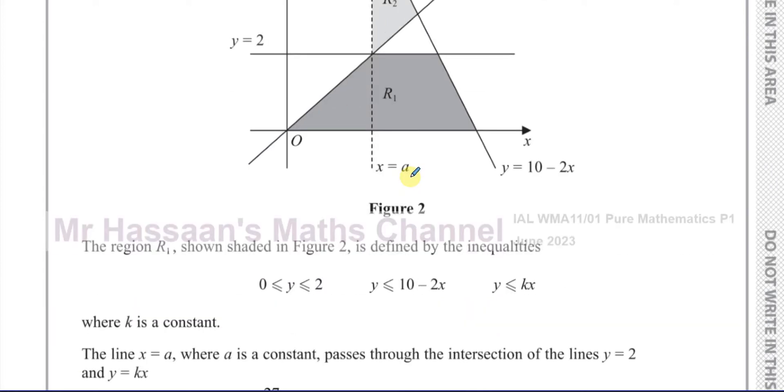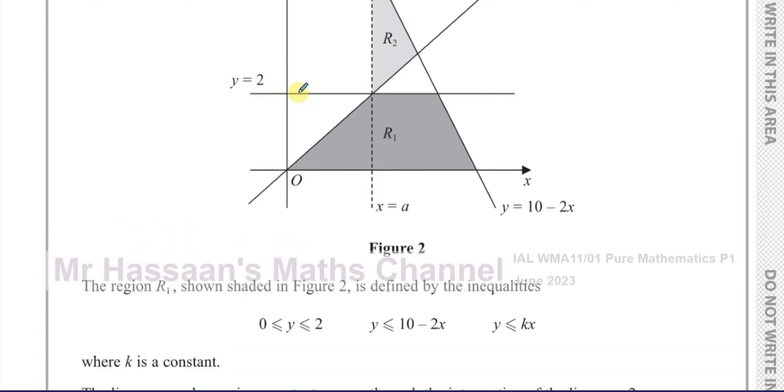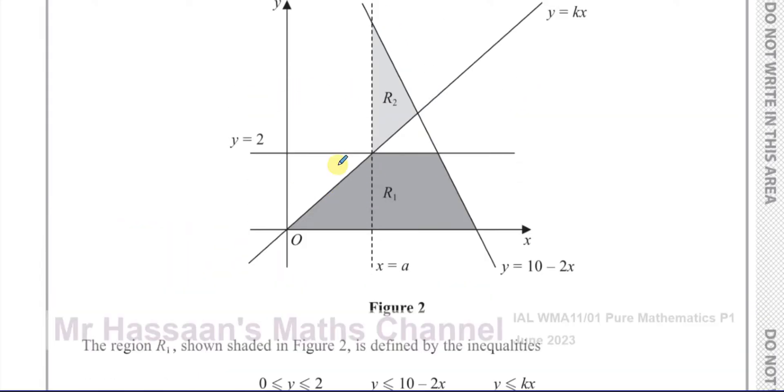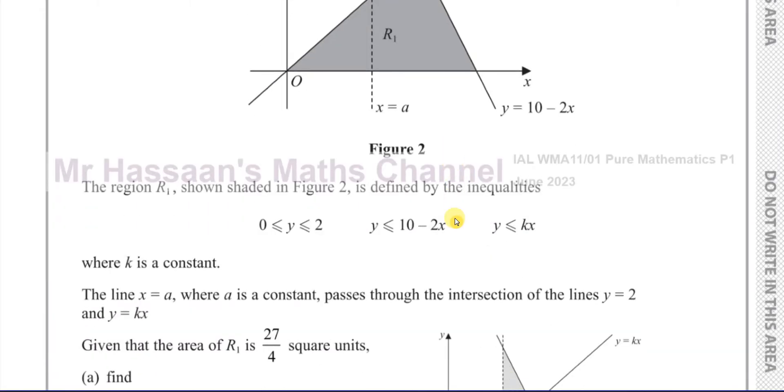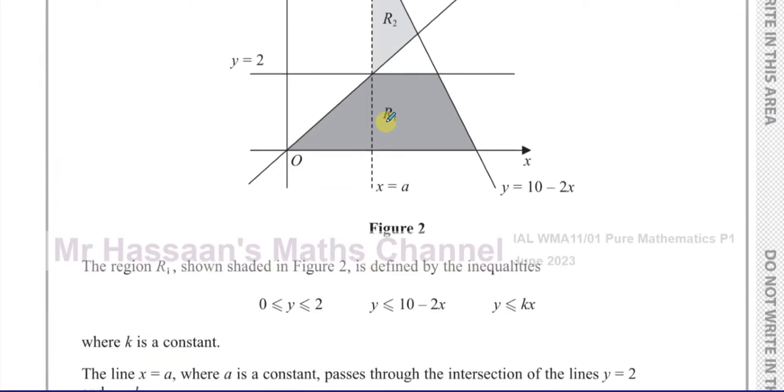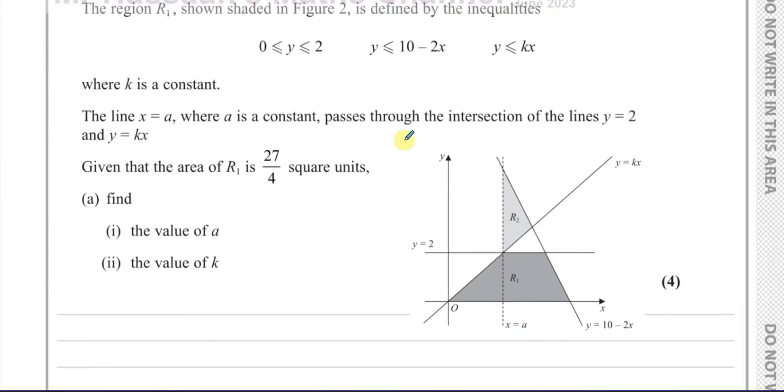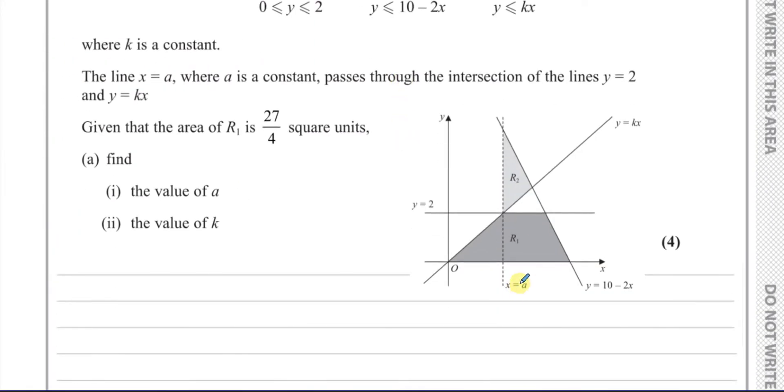It says where k is a constant, the line x equals a, where a is a constant, passes through the intersections between line y equals 2 and the line y equals kx. And given that the area of R1 is 27 over 4 square units, we've got to find the value of a and the value of k.